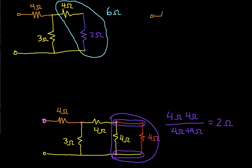So I have 4 ohms connected to 3 ohms and also connected to 6 ohms. Okay, so I've replaced the 4 ohm and 2 ohm resistors that were in series with the 6 ohm resistor.